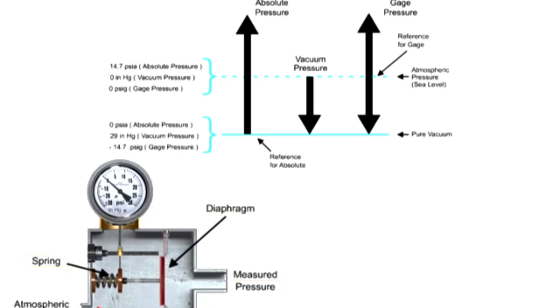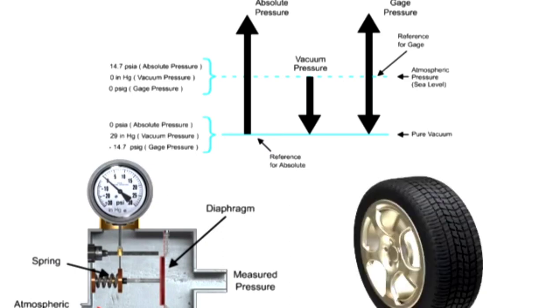Positive gauge pressures are demonstrated with an inflated tire. When the sensing element is attached to the tire, a positive pressure is indicated on the gauge.